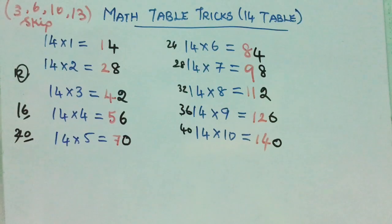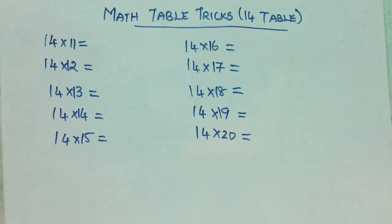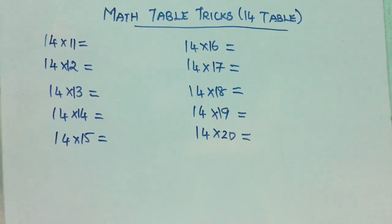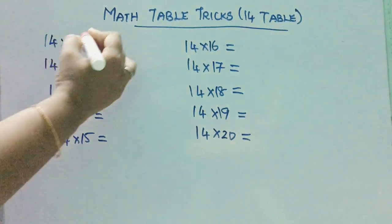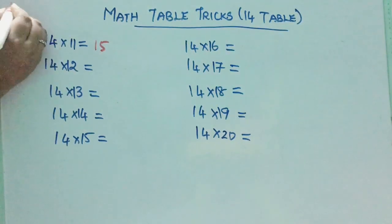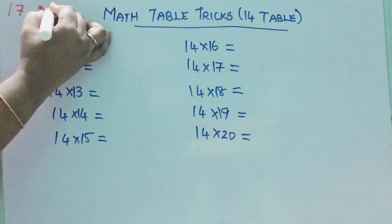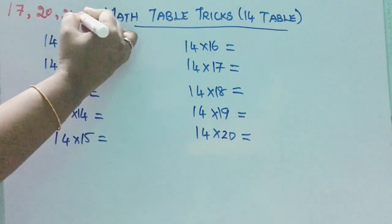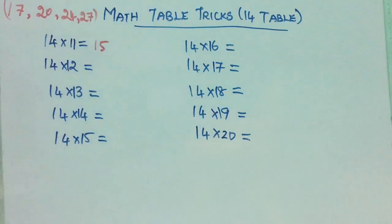Now you have got your 14 table from 1 to 10. Next we can see from 11 to 20. From 14 elevens are to 14 twenties are, we are going to write using our tricks. In 1 to 10, the last number was 14 tens are 140, so we are going to continue with 15. We will skip another 4 numbers: 17, 20, 24, and 27.